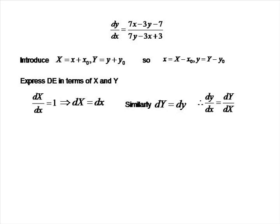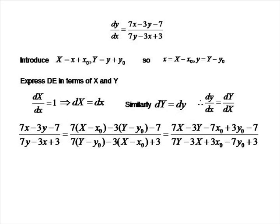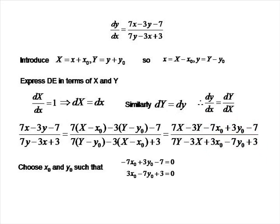To express the right-hand side in terms of capital X and capital Y, we replace the little x's and little y's by capital X minus x₀ and capital Y minus y₀ respectively. We then multiply out the brackets. If we can choose the terms now circled in red to be zero, the equation we end up with is in homogeneous form. So we need to find values for x₀ and y₀ such that minus 7x₀ plus 3y₀ minus 7 equals 0, and 3x₀ minus 7y₀ plus 3 equals 0. What we have here is a pair of simultaneous equations we can solve using the usual methods.